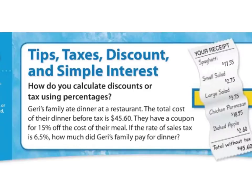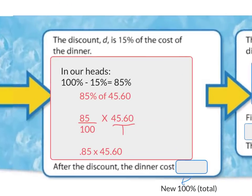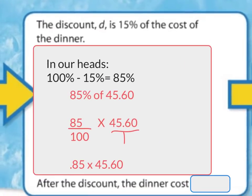If the rate of sales tax is 6.5%, how much did Jerry's family pay for dinner? I'm asking myself: what do I need to do first? Well, they gave us this total — $45.60 — but that's not actually what they're going to pay tax on. We need to find what they're going to pay tax on. They're going to pay tax on the total after they take off the 15% coupon. So the discount is 15% here.